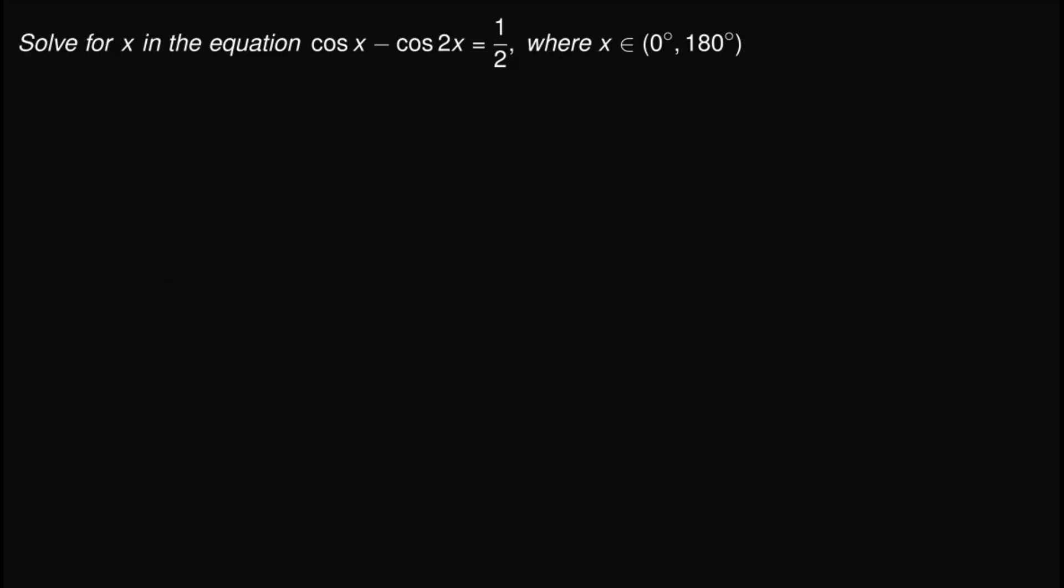Hi there, for this video, we are tasked to solve for x in the equation cosine x minus cosine 2x equals one half, where x is in the set from zero degrees up to 180 degrees.